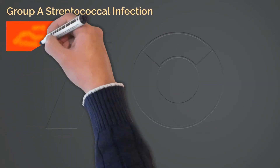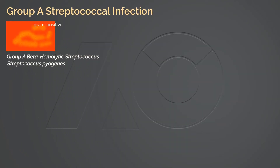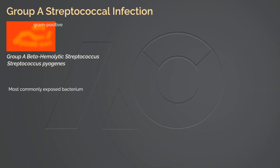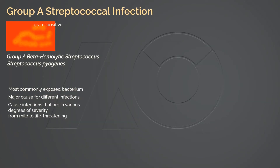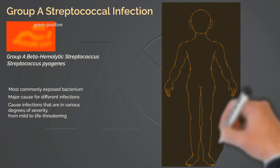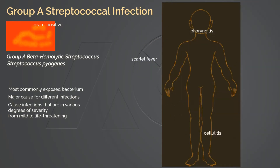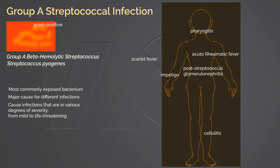Group A beta-hemolytic Streptococcus, also known as Streptococcus pyogenes, is a gram-positive cocci that appears in the shape of chains. It is the bacterium we are most commonly exposed to in daily life and is a major cause for different infections with various degrees of severity, from mild to life-threatening. Infections include pharyngitis, cellulitis, scarlet fever, impetigo, acute rheumatic fever, post-streptococcal glomerulonephritis, type 2 necrotizing fasciitis, and streptococcal toxic shock syndrome.